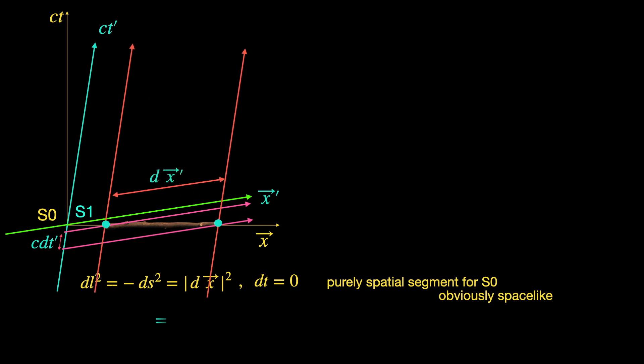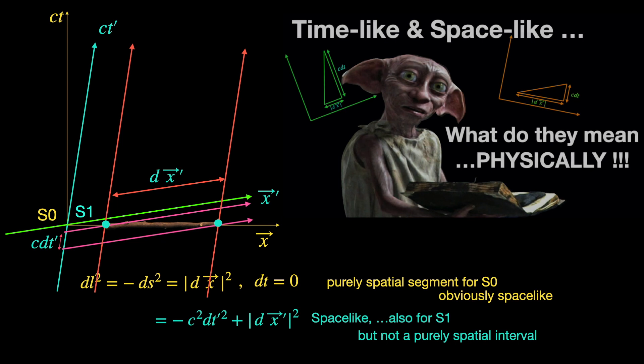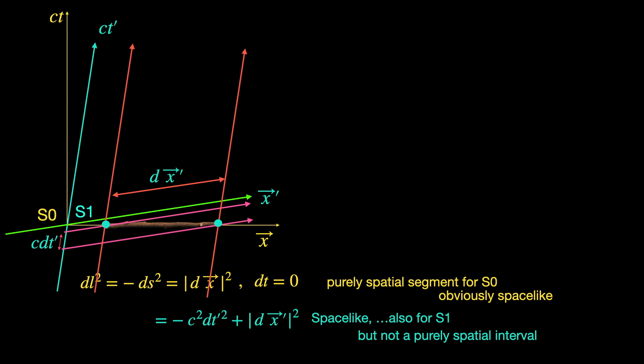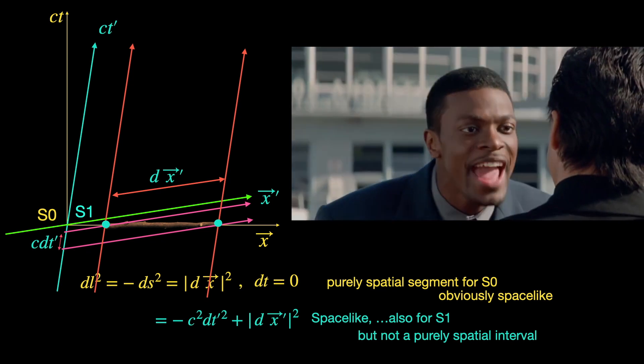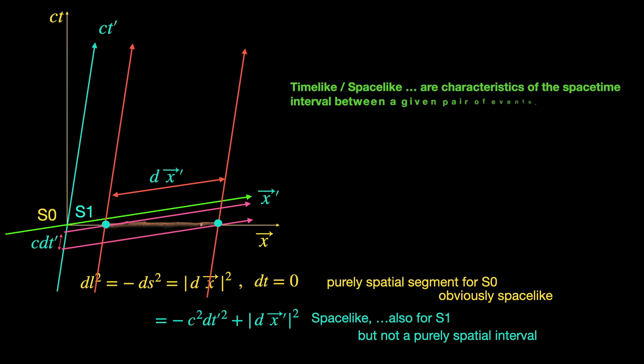So, the observer in S1 frame sees a combination of spatial length and elapsed time for the same spacetime interval which appeared as a pure length to us in S0 frame. In an earlier video in this channel on types of spacetime interval, we have explained that for any given spacelike interval, there is always one frame where it appears as a spatial length. In this example, our S0 is that frame. So, hopefully you are getting the trend, right? Do you understand? Being timelike and spacelike are characteristics of the spacetime interval itself.